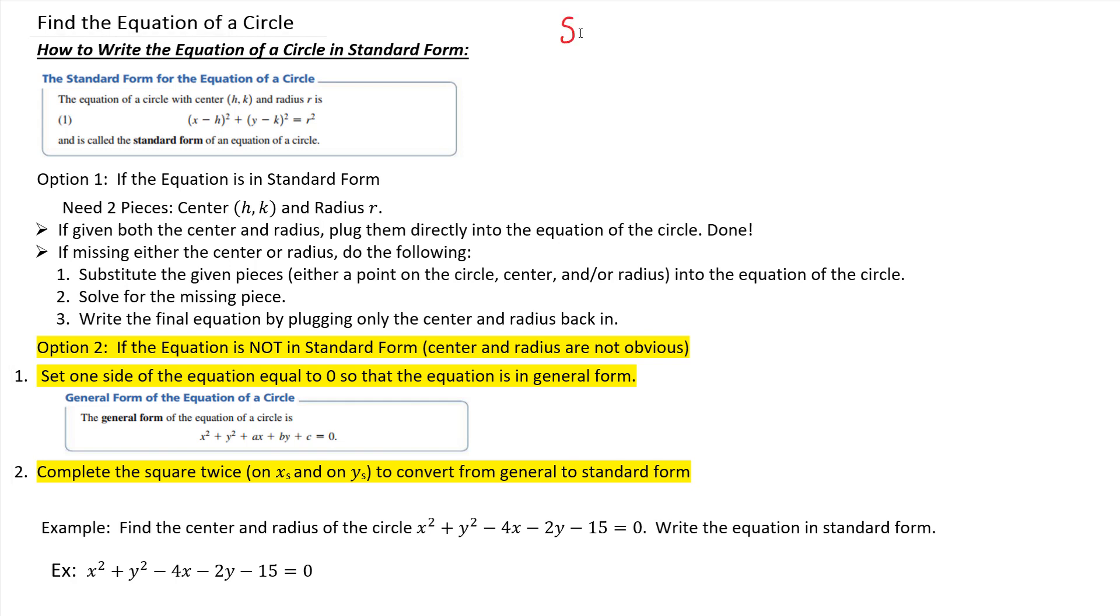We're going to work on getting it in standard form. So that's our goal, working towards standard form. The first thing I would do is group all my x's together. So I have an x squared term, and then I have the minus 4x. I'd put those next to each other.